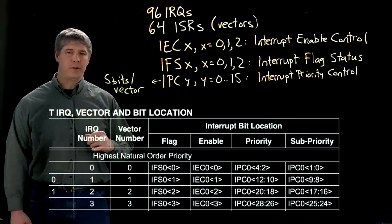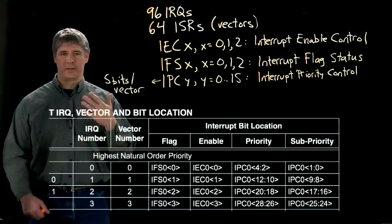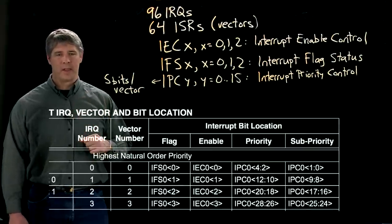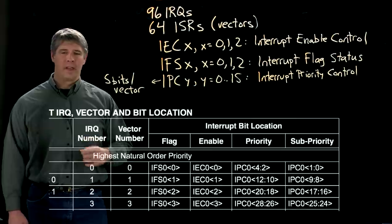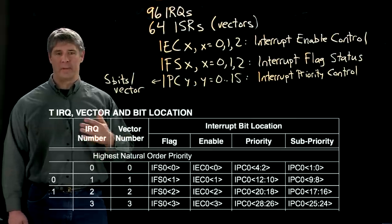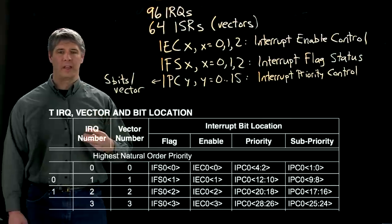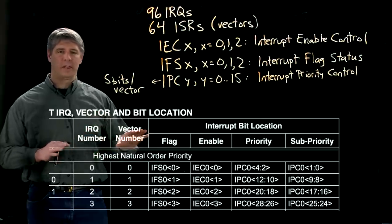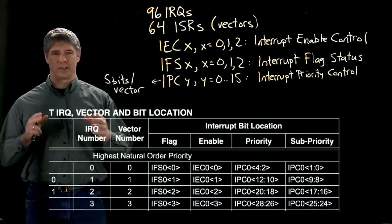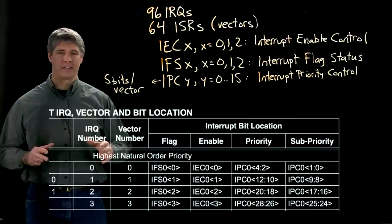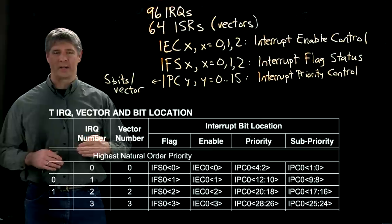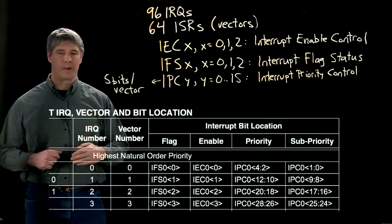So if you have an interrupt executing at priority five, for example, and sub-priority zero, and another interrupt comes in with interrupt five and sub-priority three, it's still going to be made to wait until the current interrupt has ended. So a sub-priority cannot override a current interrupt service routine in process.